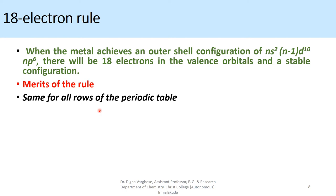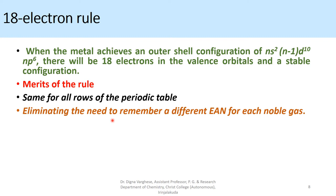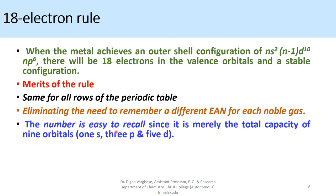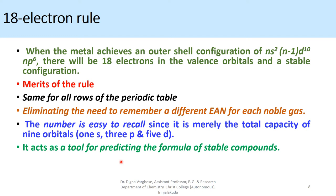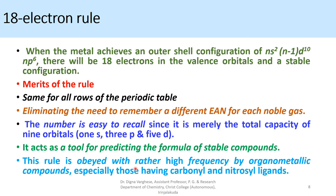The merits of the 18-electron rule are: first, it is the same for all rows of the periodic table; second, it eliminates the need to remember a different EAN for each noble gas; third, the number is easy to recall since it is merely the total capacity of 9 orbitals — 1s, 3p, and 5d. It also acts as a tool for predicting the formula of stable compounds. This rule is obeyed with rather high frequency by organometallic compounds, especially those having carbonyl and nitrosyl ligands. If a complex obeys the 18-electron rule, it is said to be highly stable.